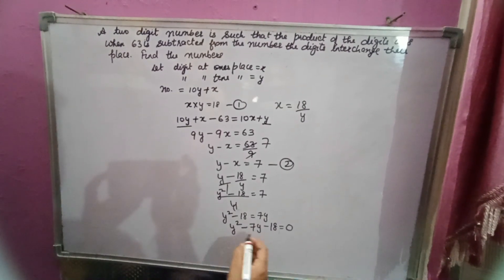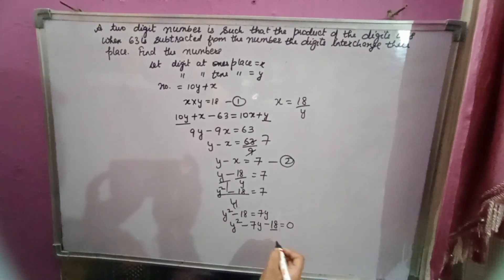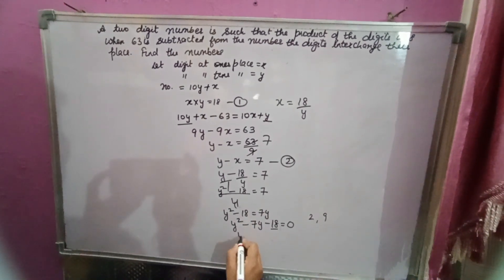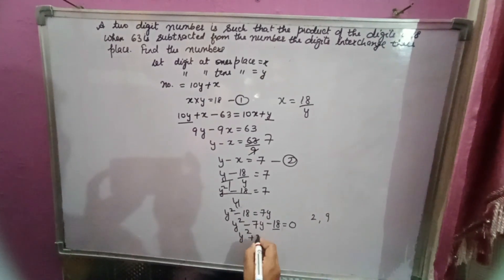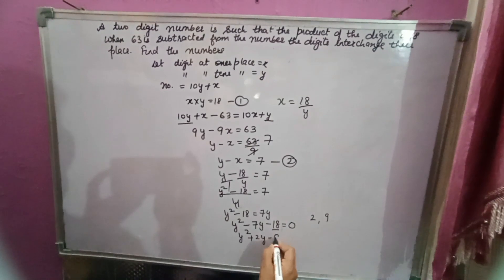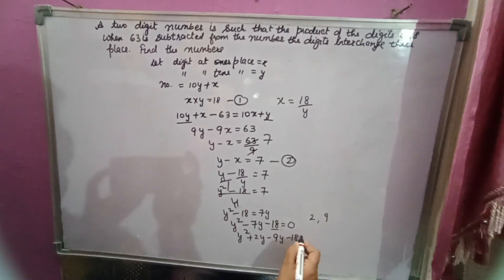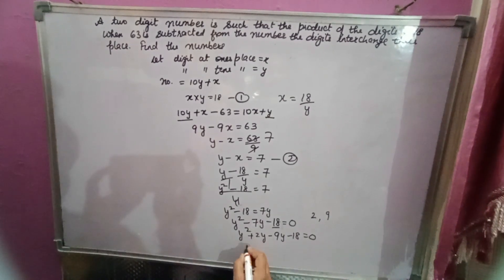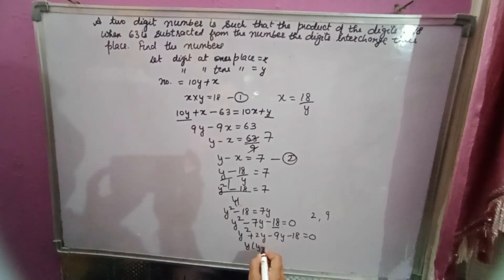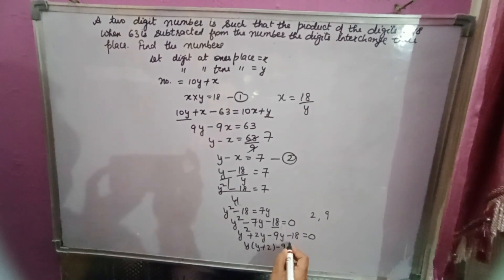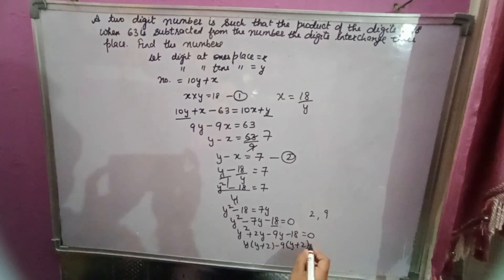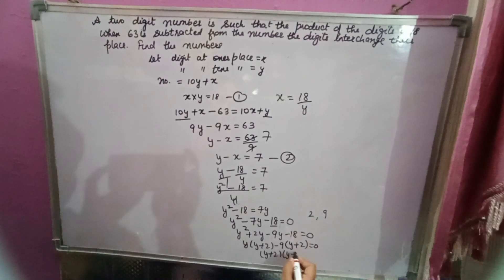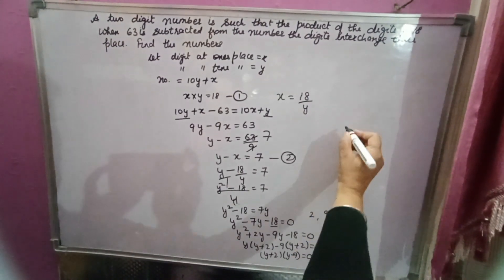Now factorize: the factors of 18 that give a difference of 7 are 2 and 9 (since 2 minus 9 equals negative 7). So: y squared plus 2y minus 9y minus 18 equals 0. Taking y common from the first pair and negative 9 from the second: y(y plus 2) minus 9(y plus 2) equals 0, giving (y minus 9)(y plus 2) equals 0.